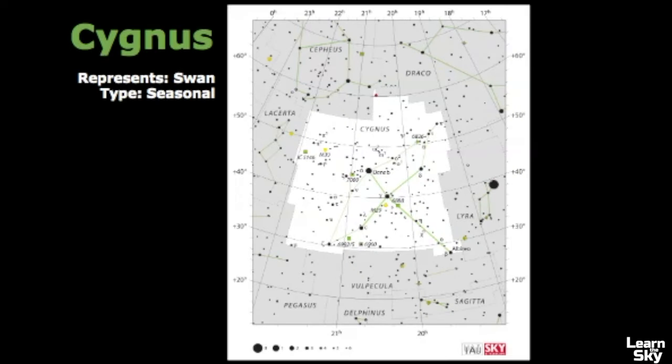Next we'll review the star pattern that Cygnus makes across the skies and get some practice with how to identify this star pattern. Here we have the official star map released by the International Astronomical Union. Here you can see all the other constellations that border Cygnus.